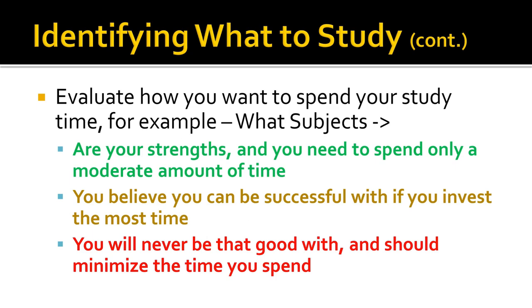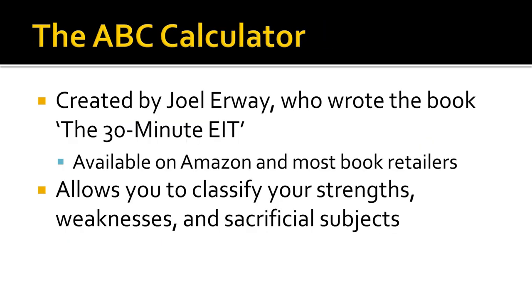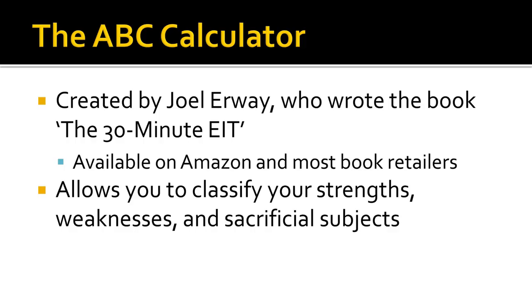Finally, you're going to have those subjects you know you're not good at. You do want to review them because you could solve a simple question related to one on the test, but you do not want to spend a lot of time here. A lot of that will be more sacrificial in nature when actually taking the test under that 2.909 minutes per question time period. The ABC calculator, as I mentioned earlier, is a great tool for helping you categorize the material — what you're good at and not so good at — and allows you to classify those strengths and weaknesses in a uniform method.